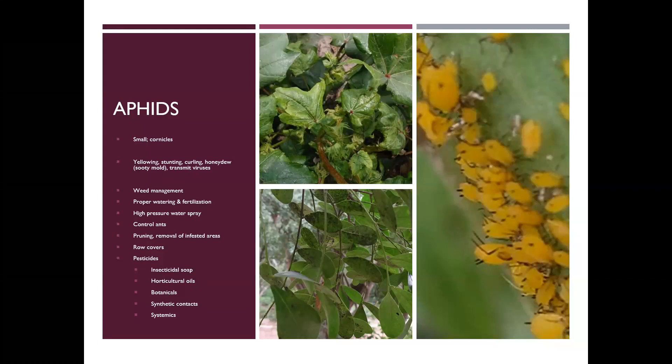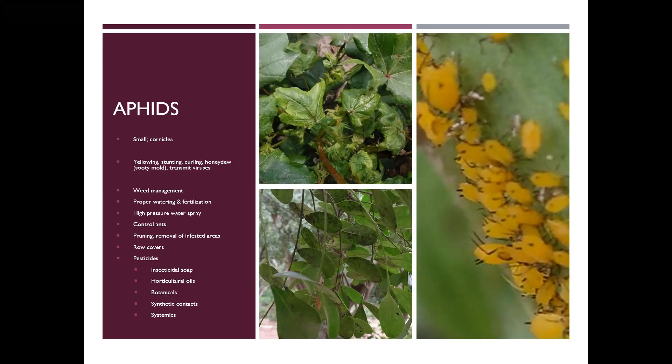We just did a podcast recording on aphids — if you want more information, listen to our podcast. But to give you the short version: the reason why their populations seem to go from zero to billions overnight is that the females do not have to mate to produce offspring, and she produces live offspring. Inside her body, new baby aphids develop, and before those babies even emerge, they're developing aphids inside of them that they can give birth to once they come out — it's literally an aphid explosion.